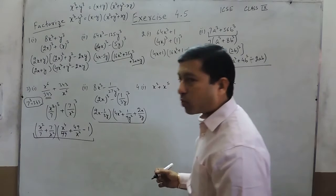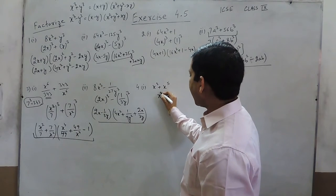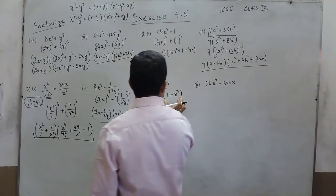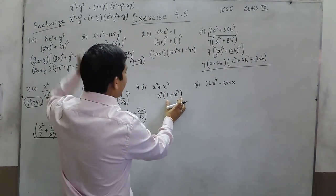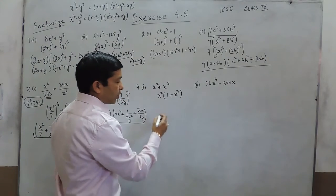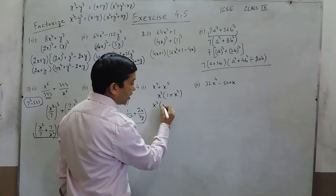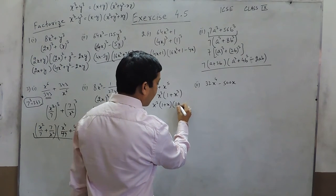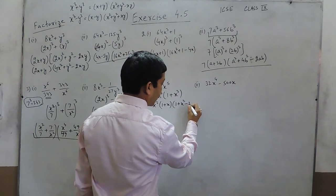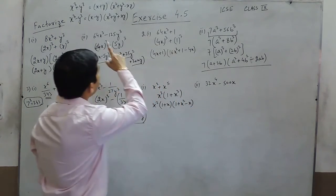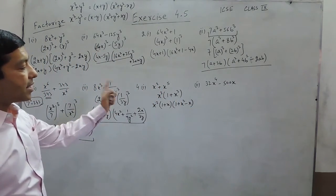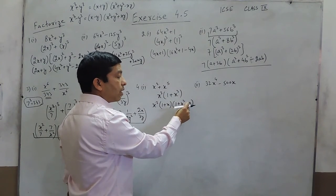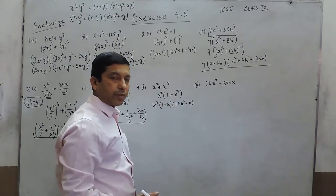For question number 4, part 1, we can take x² common, which gives x²(1 + x³). And 1 + x³ follows the same identity format x³ plus y³. So the result is x² times (1 + x) times (1 + x² − x), applying the formula: first term squared plus second term squared minus the product of the two terms.